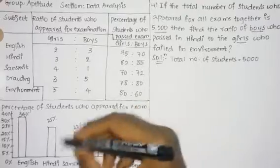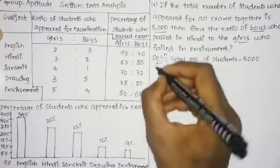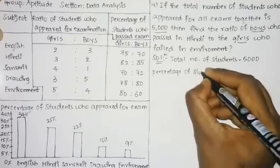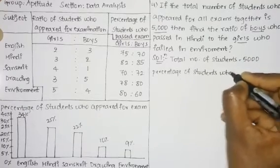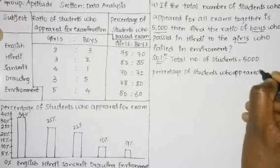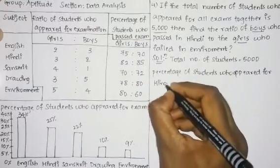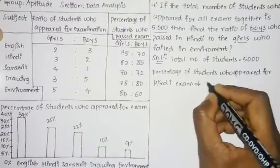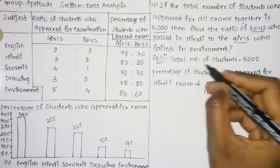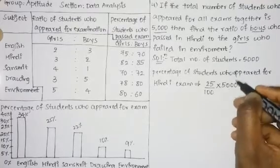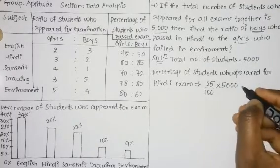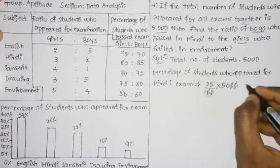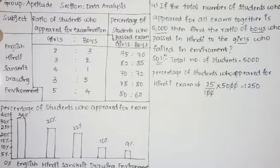From the bar graph, the percentage of students who appeared for the Hindi exam is 25%. So we calculate 25% of 5000, which is 25 divided by 100 into 5000, giving us 1250 students who appeared for the Hindi exam.